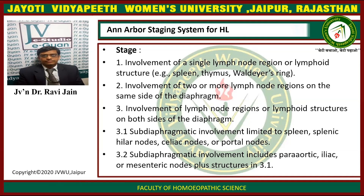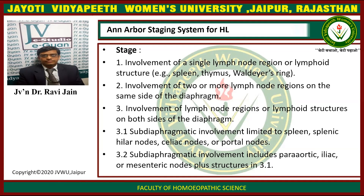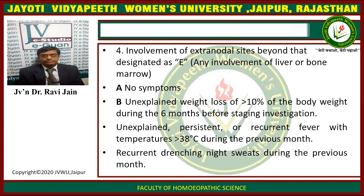The Ann Arbor staging system for Hodgkin's lymphoma: Stage 1 involves a single lymph node region or lymphoid structure such as spleen, thymus, or Waldeyer's ring. Stage 2 involves two or more lymph node regions on the same side of the diaphragm. Stage 3 involves lymph node regions or lymphoid structures on both sides of the diaphragm. Stage 3.1 is subdiaphragmatic involvement limited to the spleen, splenic hilar nodes, celiac nodes, or portal nodes. Stage 3.2 includes paraaortic, iliac, or mesenteric nodes plus the structures in 3.1. Stage 4 involves extranodal sites beyond those designated as E, including any involvement of the liver or bone marrow.